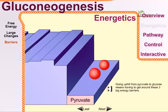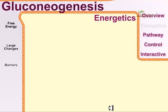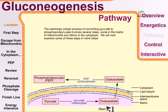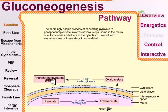This process requires energy input from outside. The seemingly simple process of converting pyruvate to phosphoenolpyruvate (PEP) involves several steps, some in the matrix of mitochondria and others in the cytoplasm. In the normal process, production of pyruvate from PEP is a one-step reaction because PEP is a very energetic molecule — it simply converts into pyruvate releasing energy. But for the reverse reaction, many other enzyme complexes are needed.